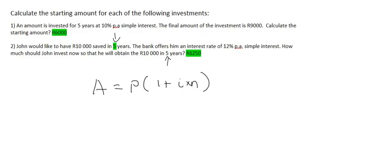We use the simple interest formula where A, which is your final amount, we've been told is 10,000 Rand. We don't know how much we're starting with, so that's P. We've got an interest rate of 12%, which is 0.12 if you divide that by 100. And then it's for five years.